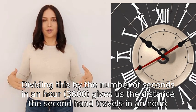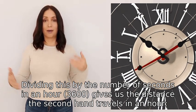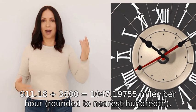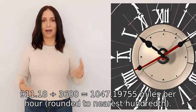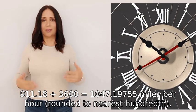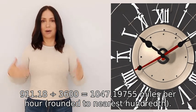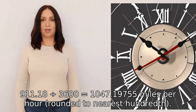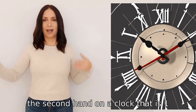Dividing this by the number of seconds in an hour (3,600) gives the distance the second hand travels per hour: 3,769,911.18 ÷ 3,600 = 1,047.19755 miles per hour, rounded to the nearest hundredth.